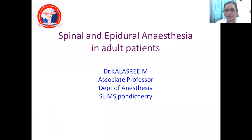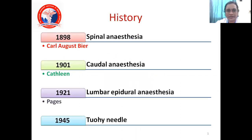Hello students, good morning to everyone. Today I hope my topic will be interesting for you. The topic I'm going to take is about spinal and epidural anesthesia. In spinal anesthesia, you're going to work with the vertebral column, check the spinal cord, and give a drug in that area. Once you give the drug in that area, it will cause loss of sensation and motor loss below the umbilicus, making it easy for surgeons to perform surgery.